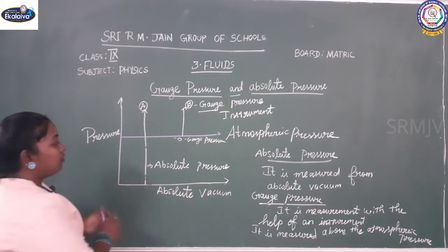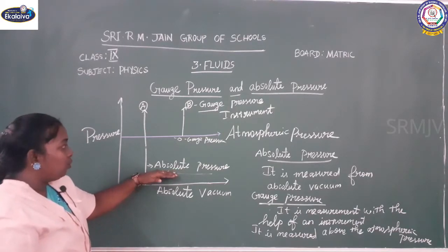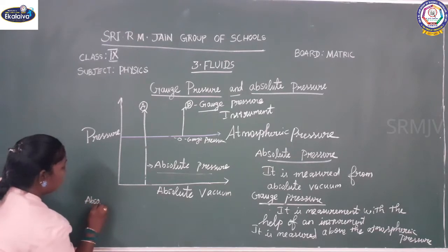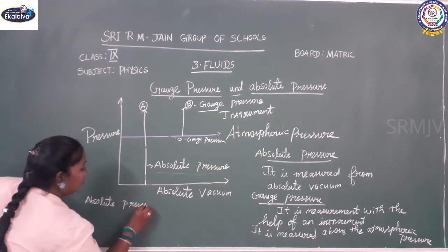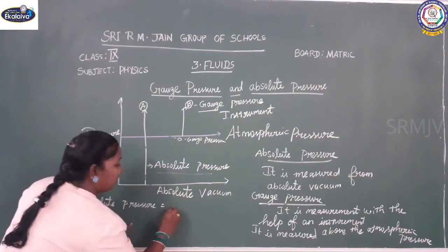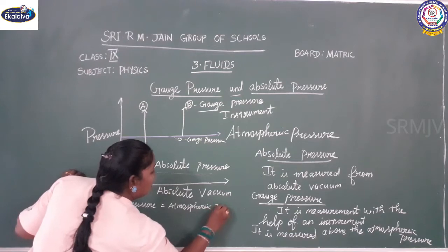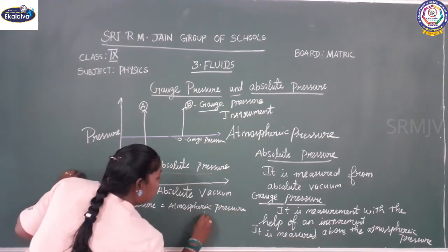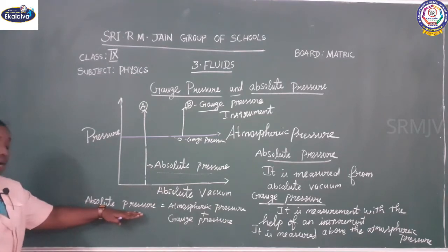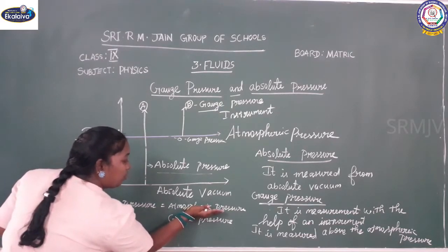Now we are going to find how absolute pressure will act. When the pressure is higher than the atmospheric pressure, it gives the value along with the atmospheric pressure. So absolute pressure, when it is higher than atmospheric pressure, equals atmospheric pressure plus gauge pressure.